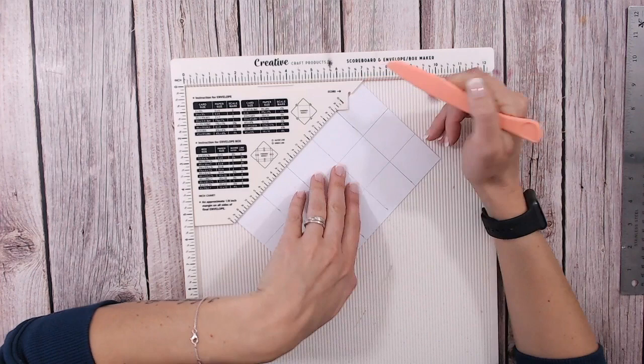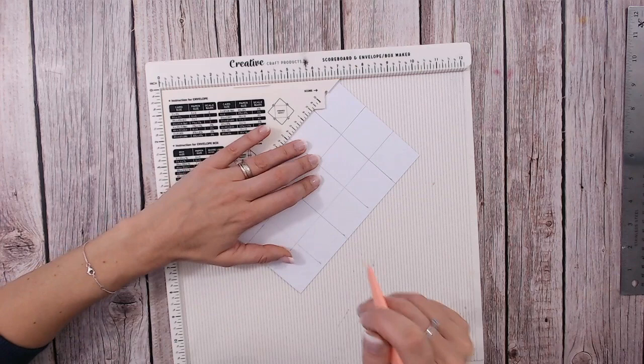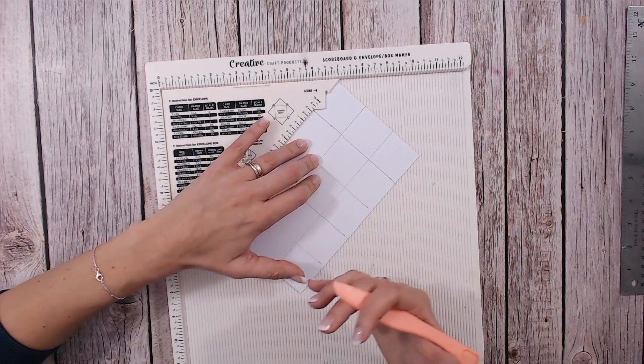And we're going to start in one corner. As you start going through this process and you start to get to understand it, you'll probably be doing more than one square at a time. But I would say to start with, work on one square at a time and then move your paper, move along to the next square. That will just give you more confidence, make sure you're doing it all correctly.